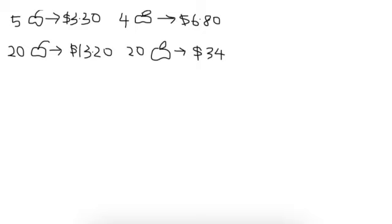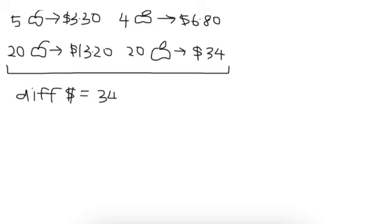So now between the same number of apples and peaches, we will find the difference in the money, different in pricing. And this will be equals to 34 minus 13.20. And this will actually give us 20.80.